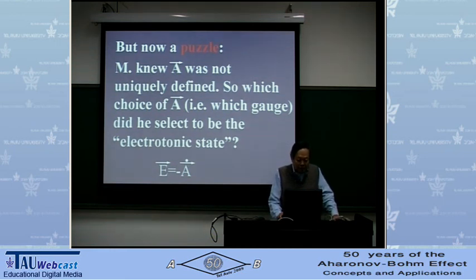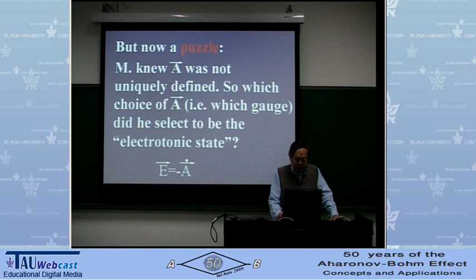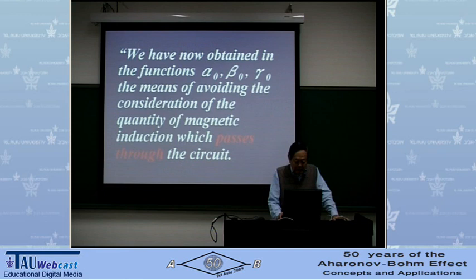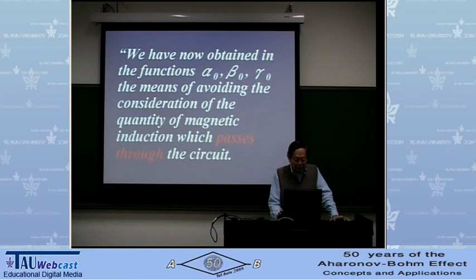Maxwell knew that the vector potential was not uniquely defined. So we should ask: which choice of A — in modern language, which A gauge — did he select to be the electrotonic state, in formulating the formula E = -Ȧ? If you search through that paper, there is one paragraph which has some bearing on this puzzle.